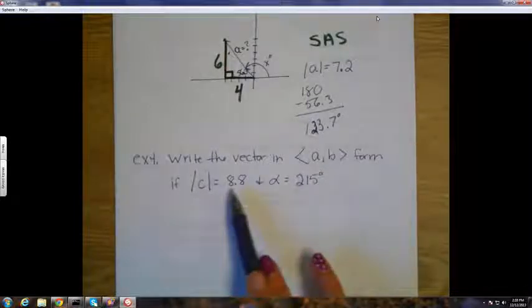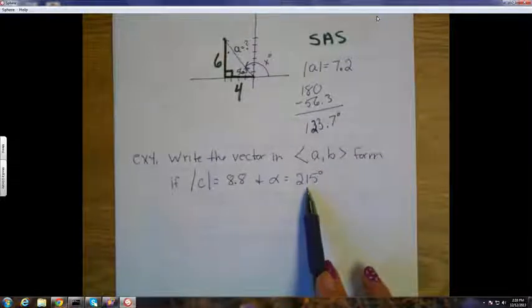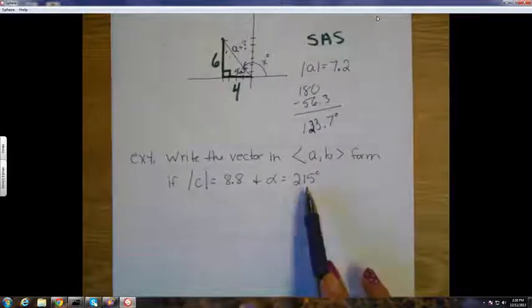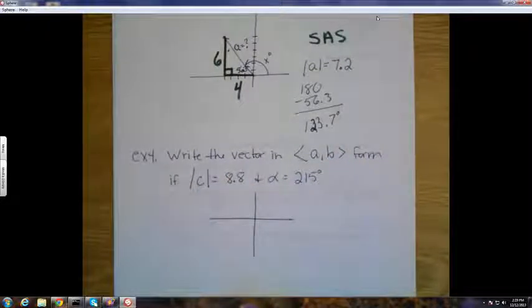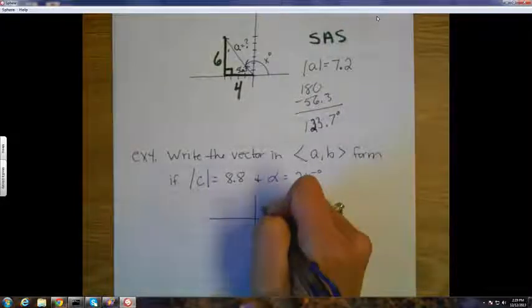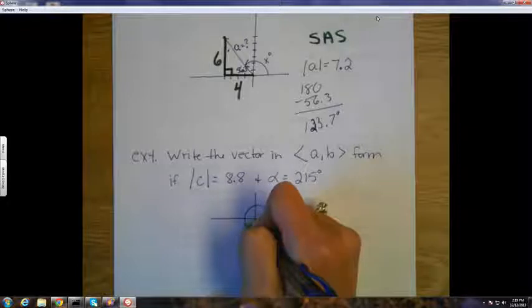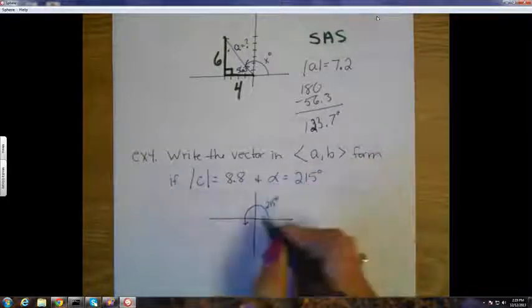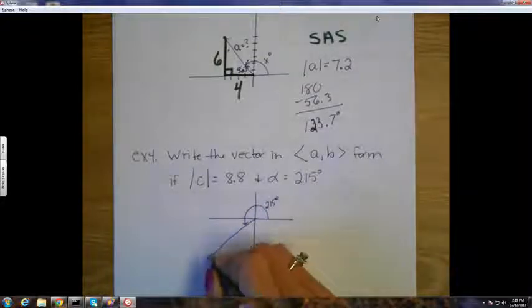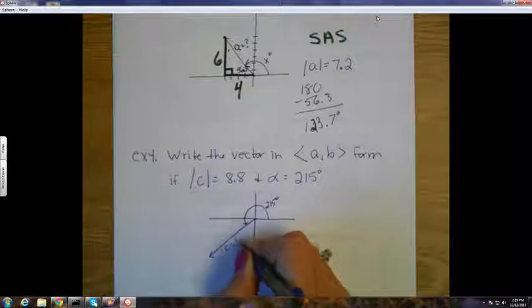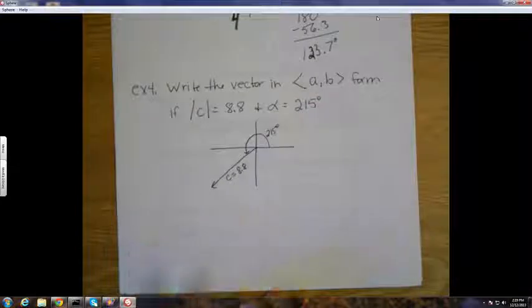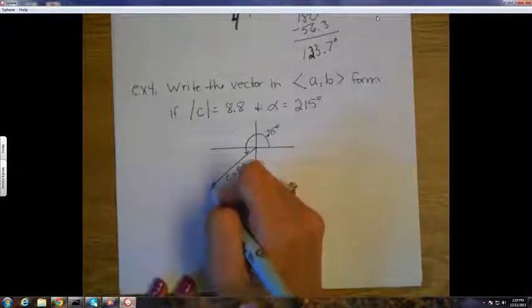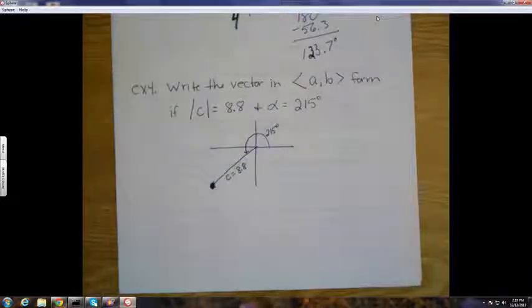Well, which quadrant is this vector C in if it's got a 215 degree rotation? Three? Yeah. Notice how I use all the information and I label the picture. 215 is this rotation. That's how I get into quadrant 3. The C is 8.8. So what I am looking for is this endpoint. And you can always make the right triangle when you're on the coordinate plane, and the legs of the right triangle are going to give me the A and the B, my X and my Y.